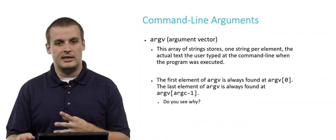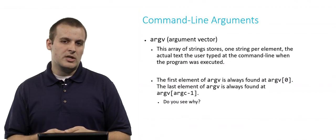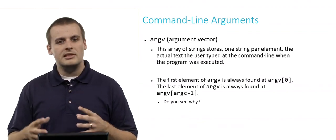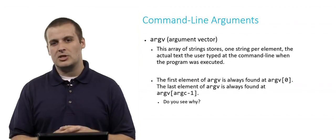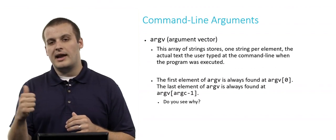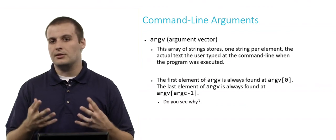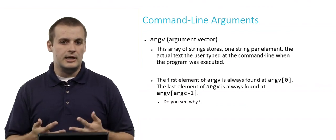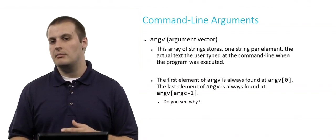The last element of argv is always found at argv square brackets argc minus 1. Do you see why? Remember, how many elements exist in this array? Well, we know that it's argc number of elements. If the user typed three things in the command line, argc is 3. But because in C when we're working with arrays, each element of the array, or rather the indices of the array start at 0, if we have three elements in our array, we have an element at argv 0, an element at argv 1, and an element at argv 2. There is no element at argv 3 in an array of size 3. So that's why the last element of argv can always be found at argv square brackets argc minus 1.